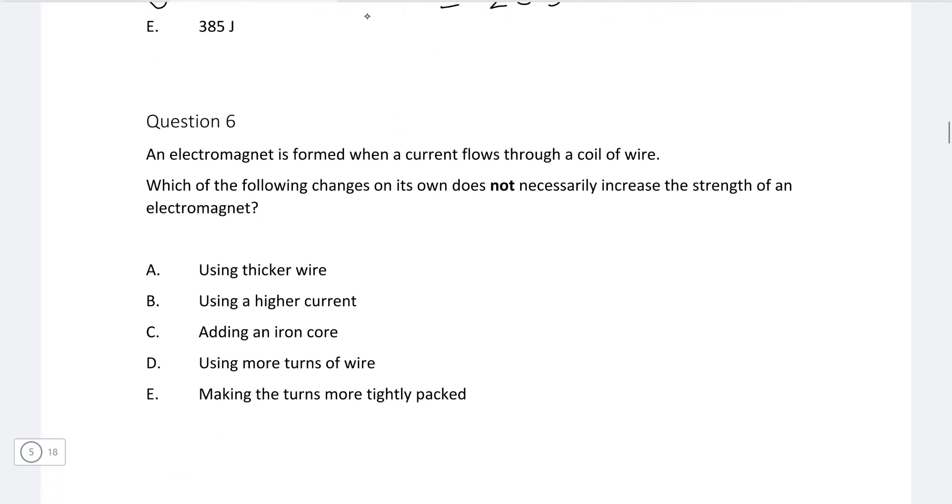Okay, next one: an electromagnet is formed when a current flows through a coil of a wire. Which of the following changes on its own does not necessarily increase the strength of the electromagnet? So A, using a thicker wire. Well, this does not actually change it, but let's also explain why the other results do change it.